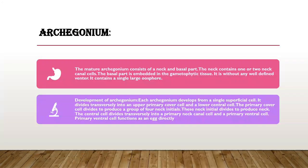Archegonium: the mature archegonium consists of neck and basal cells. The neck contains one or two neck canal cells. The basal part is embedded in the gametophytic tissue, without any well-defined venter. It contains a single large osphere or egg. Development: each archegonium develops from a single superficial cell. It divides transversely into an upper primary cover cell and a lower central cell. The primary cover cell divides to produce four neck initial cells, which divide to produce the neck. The central cell divides into a primary neck canal cell and a primary ventral canal cell. The primary ventral canal cell functions as an egg directly.